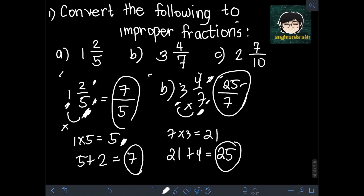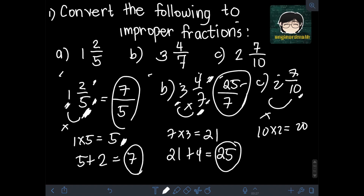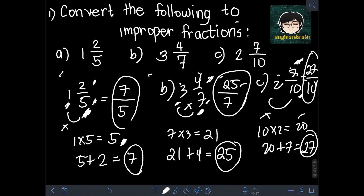Lastly, for C, we have 2 and 7 over 10. The first step is to multiply the denominator 10 by the whole number 2: 10 times 2 is 20. Then we add the numerator 7 to the product: 20 plus 7 is 27. So the improper fraction for this mixed number is 27 over 10.